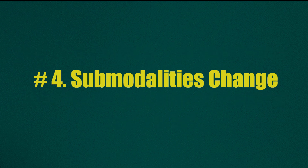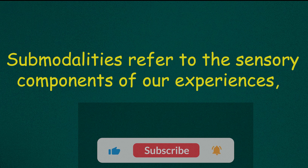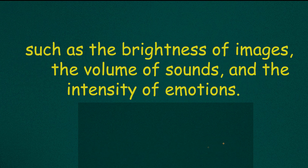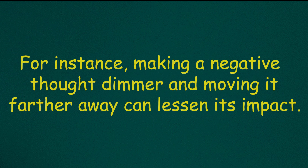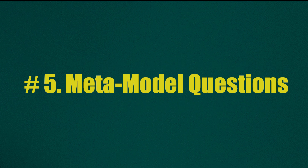4. Submodalities Change: Submodalities refer to the sensory components of our experiences, such as the brightness of images, the volume of sounds, and the intensity of emotions. Changing submodalities can influence the way you experience thoughts and emotions. For instance, making a negative thought dimmer and moving it farther away can lessen its impact.